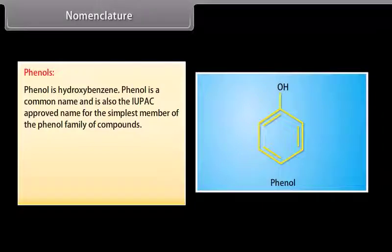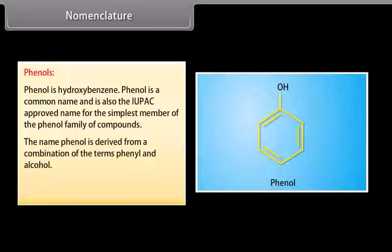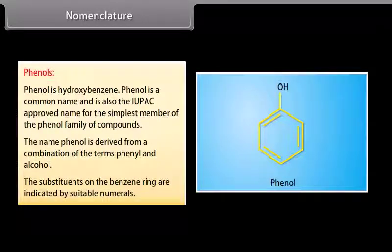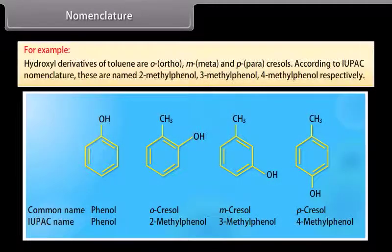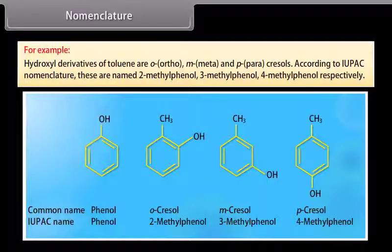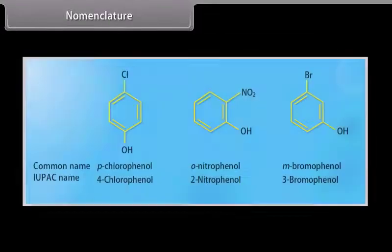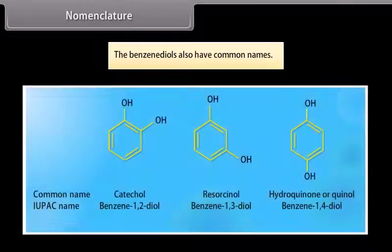Nomenclature of phenols: phenol, also called hydroxybenzene, is both the common name and the IUPAC approved name for the simplest member of the phenol family. The name 'phenol' is derived from a combination of 'phenyl' and 'alcohol.' Substituents on the benzene ring are indicated by numbers. For example, hydroxyl derivatives of toluene are ortho-, meta- and para-cresols, named 2-methylphenol, 3-methylphenol and 4-methylphenol respectively. Benzene diols also have common names.